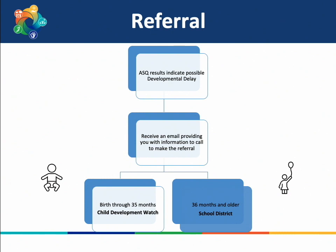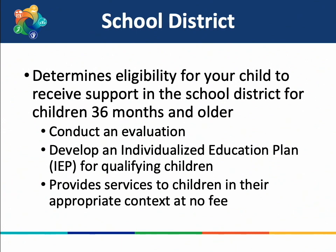If ASQ results indicate a potential delay and your child is 36 months or older, you will be provided with contact information to request a formal evaluation with the appropriate school district to determine if your child would be eligible for services. Your school district provides services for children 36 months and older in their school, childcare, or home setting at no cost to families. If your child is eligible, you and a team will develop an Individualized Education Plan, or IEP, with early childhood special education services tailored to meet your child's needs. Your consent is required to provide services. If your child qualified for CDW before age 3, they will also go through this process just prior to age 3 to determine eligibility through the school district.